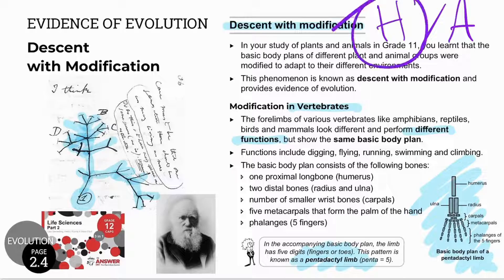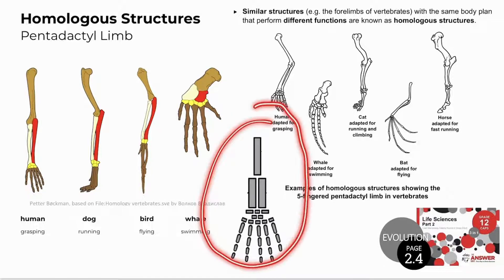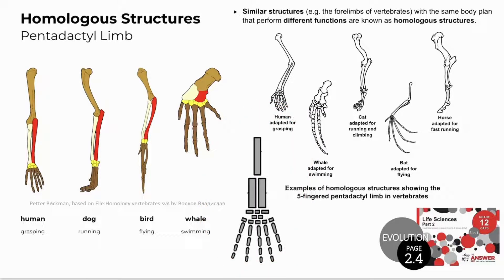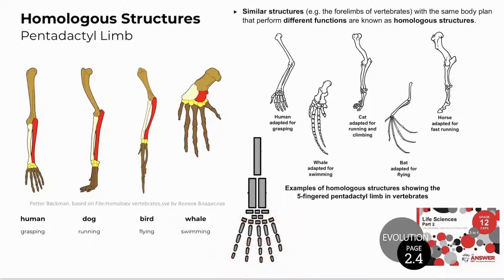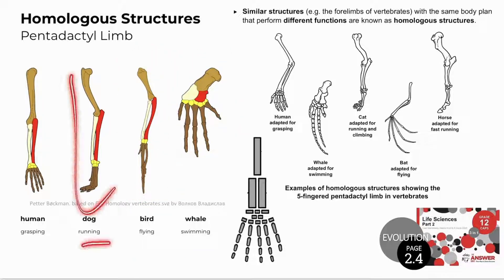Homologous structures, as described by Darwin, show a similar structure or body plan adapted for different functions in different vertebrates. The vertebrate forelimb consists of one long bone, followed by two smaller long bones, then wrist bones, hand bones, and five phalanges or fingers — hence the pentadactyl limb. This basic body pattern appears in birds for flying, whales for swimming, dogs for running, and others. Similar structure with different functions indicates a common ancestor, and these are known as homologous structures.